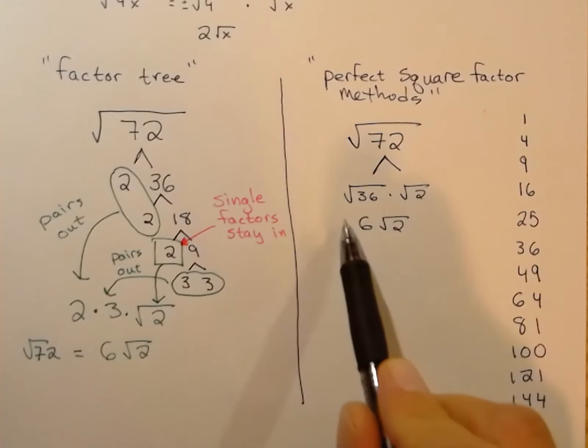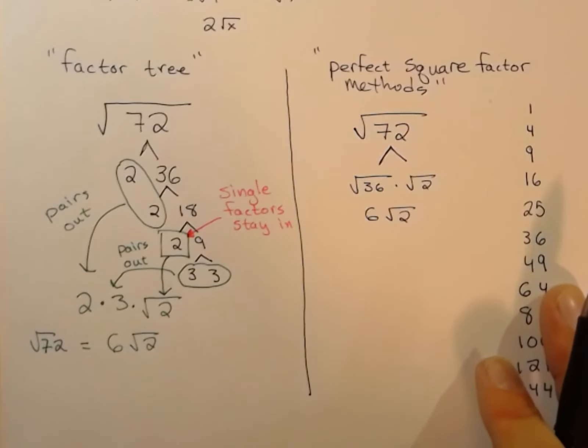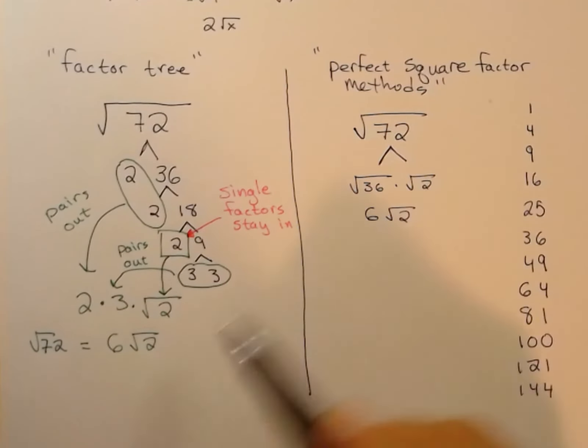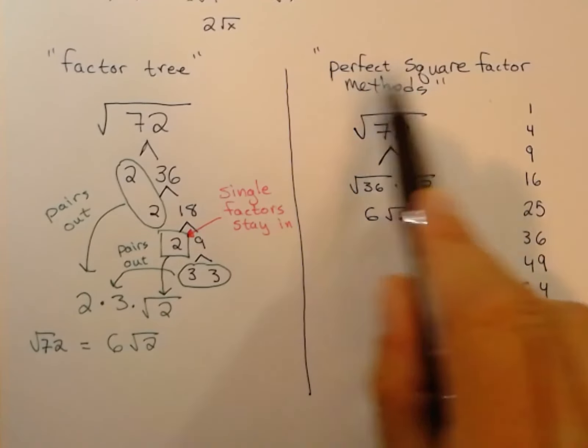Once again, in algebra you'd put a plus minus in front of that, but in geometry we'll just consider the plus. So we get 6√2, both times.